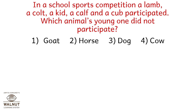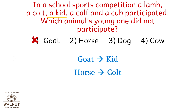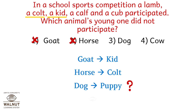In a school sports competition, a lamb, a colt, a kid, a calf and a cub participated. Which animal's young one did not participate? Kid is of a goat. A colt is of a horse. Puppy is of a dog — can we see that in the above sentence? No. So the correct answer is option number 3: Dog.